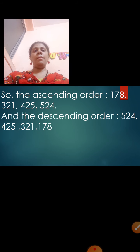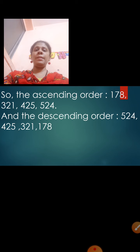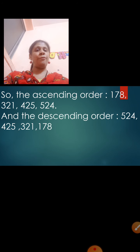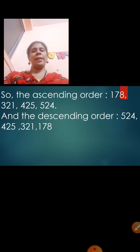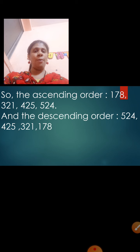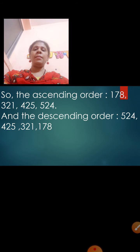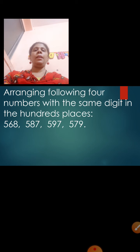With the same numbers, the descending order — starting from the largest number 524 — is: 524, 425, 321, and 178.